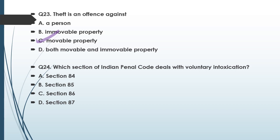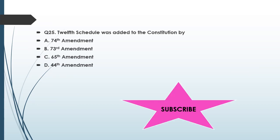Question number twenty-four: Which section of the Indian Penal Code deals with voluntary intoxication? Option A: section 84, option B: section 85, option C: section 86, option D: section 87. Intoxication is codified in sections 85 and 86 of the IPC, 1860. Tell me in the comment box below which section deals with voluntary — not involuntary — intoxication.